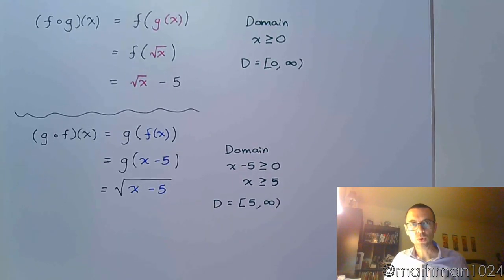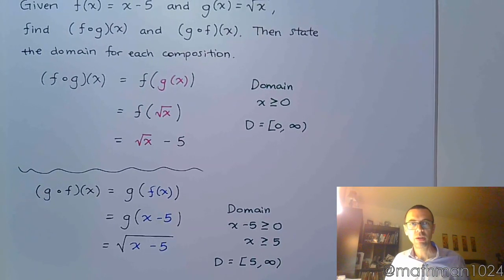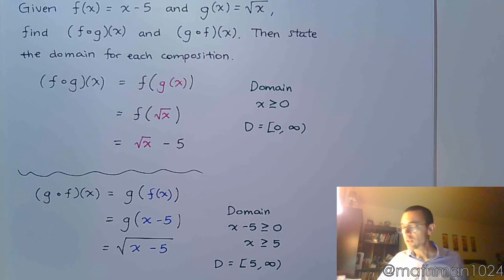So again, different orders for the composition means that we have different functions at the end, and also means we have different domains. So pay attention to this and watch out for it when you go to the homework. And coming up, we're going to have a lot of fun with graphing.